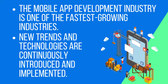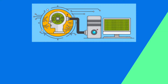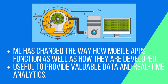Technology has now advanced to a great level. The mobile app development industry is one of the fastest growing industries. New trends and technologies are continuously introduced and implemented by developers while building an app. One such trend is implementing machine learning, which has changed the entire scenario of the app development industry to a huge extent. It has changed the way mobile apps function as well as how they are developed.